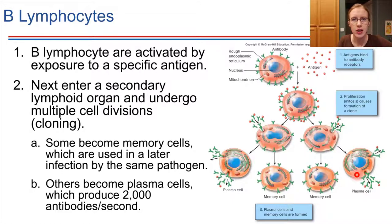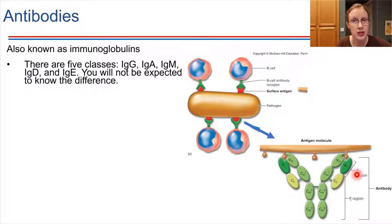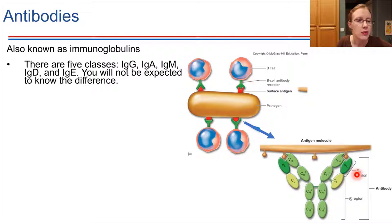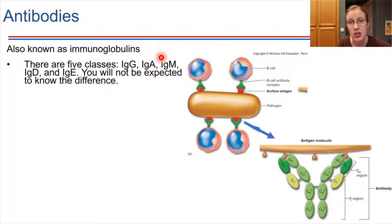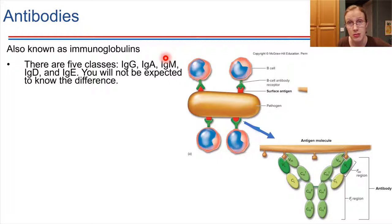Let's focus on antibodies for a minute. Antibodies are also called immunoglobulins — that's another name for them. There are five major classes of immunoglobulins. Their names are often abbreviated IgG, IgA, IgM — these are all different classes of immunoglobulins or antibodies.